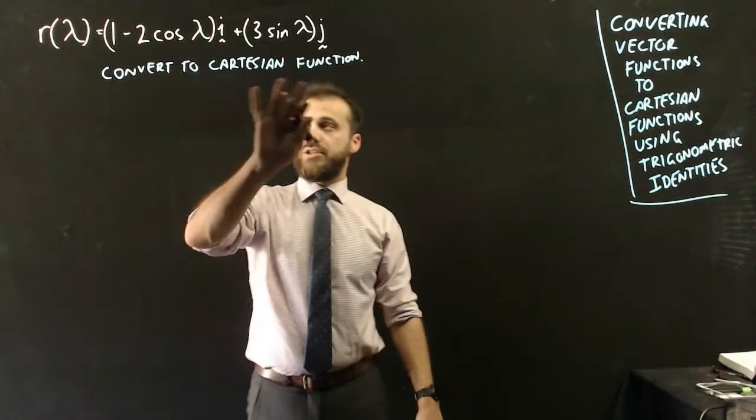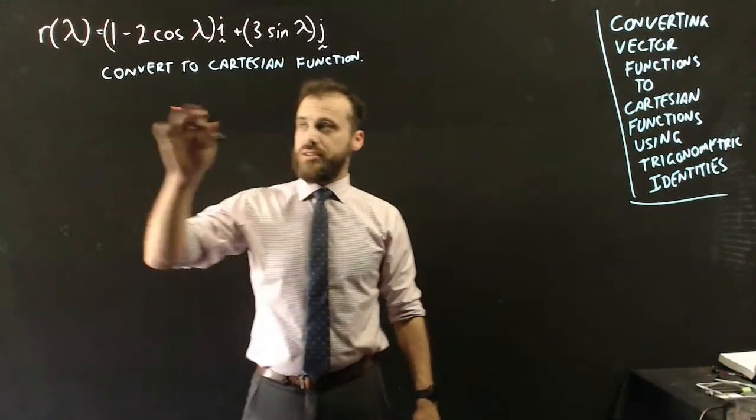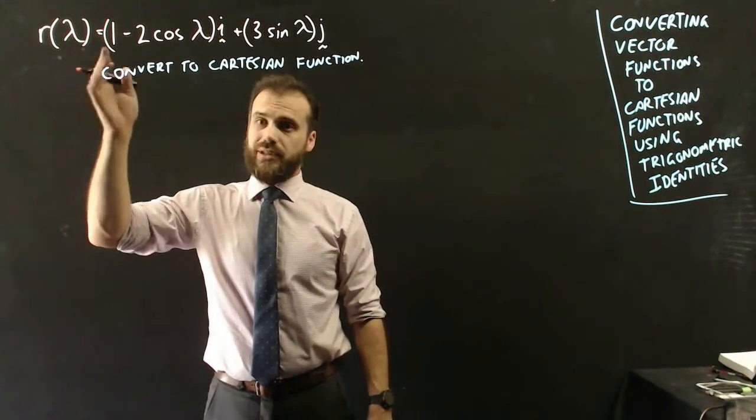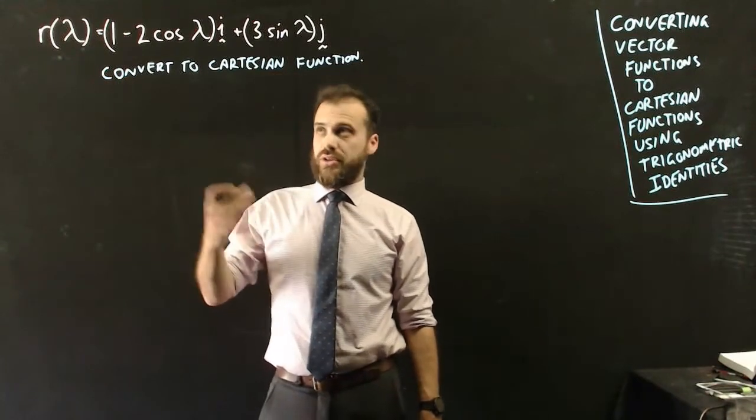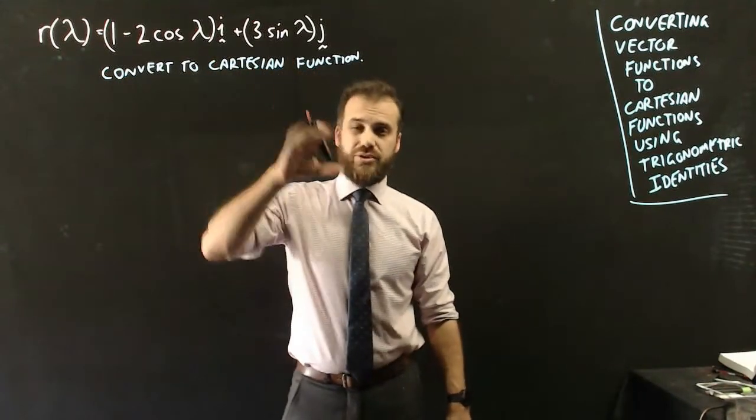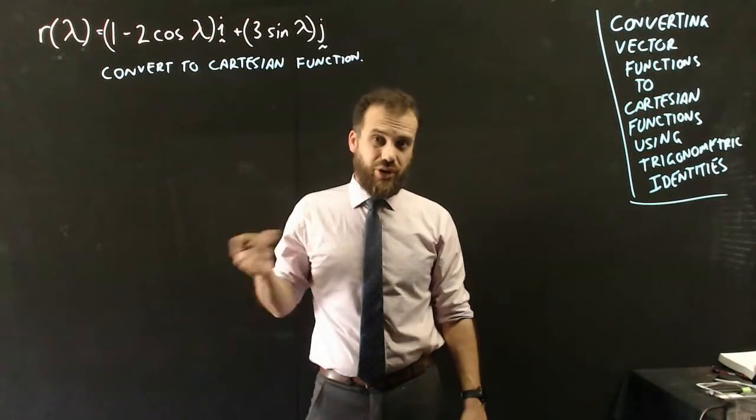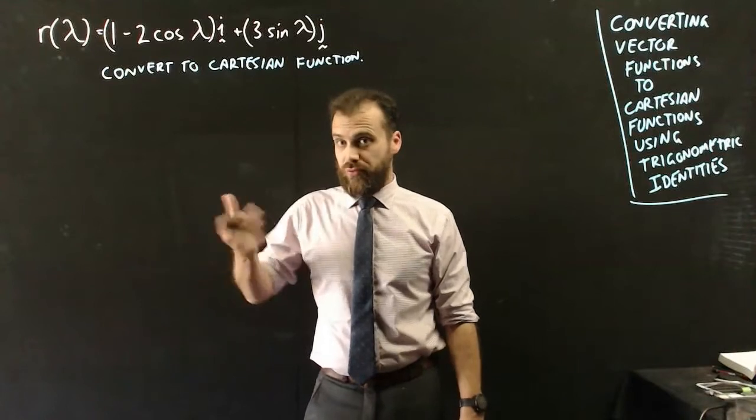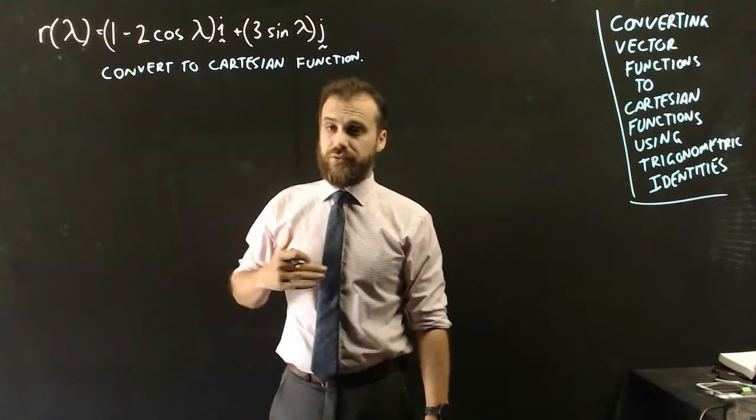So we're looking at vector functions again. We're going to convert them to Cartesian functions, or we're going to use trig identities to do it. So we're going to convert this to a Cartesian function. Now you'll notice that it's not in terms of time this time, it's in terms of something called lambda. That's just to show that our i and j components don't have to depend on time. This whole thing could be happening based upon some other third variable, and lambda will do for this one.